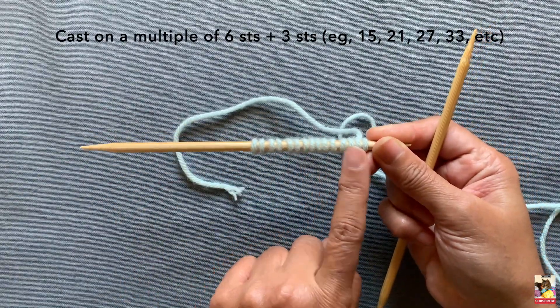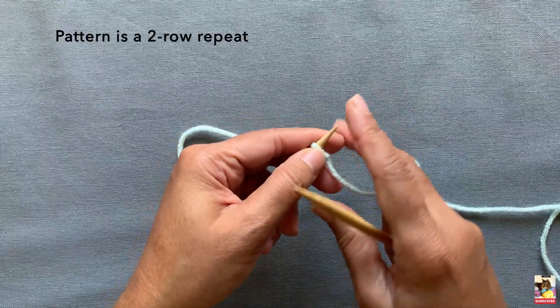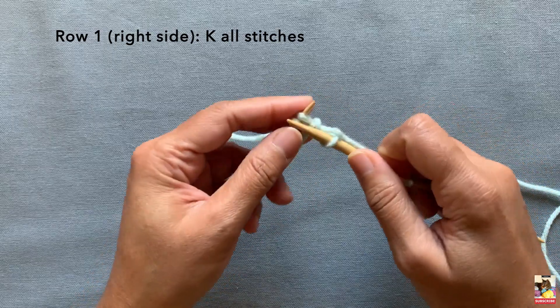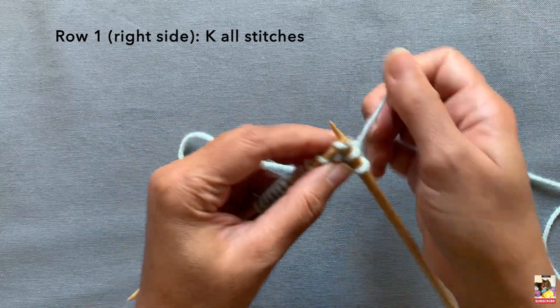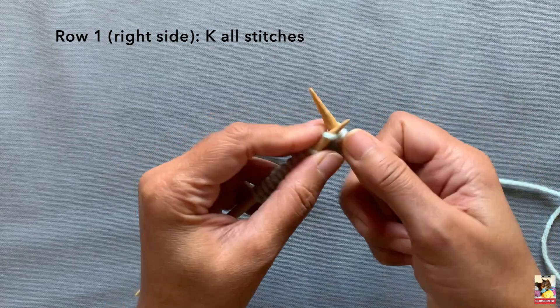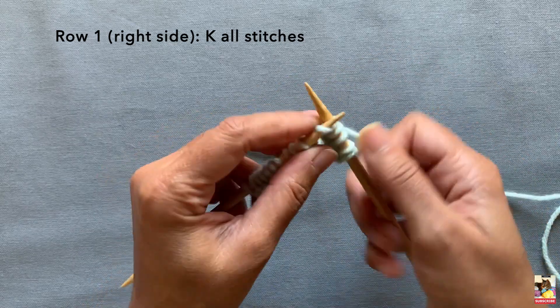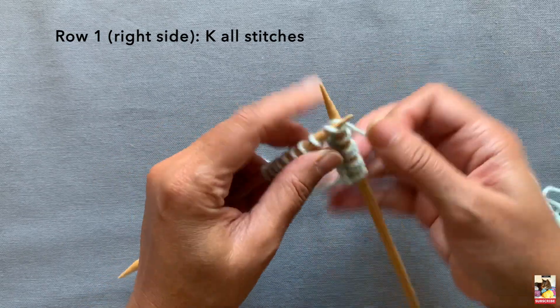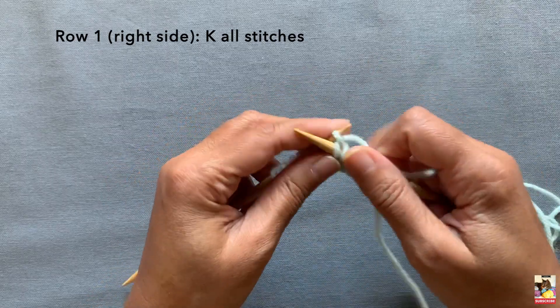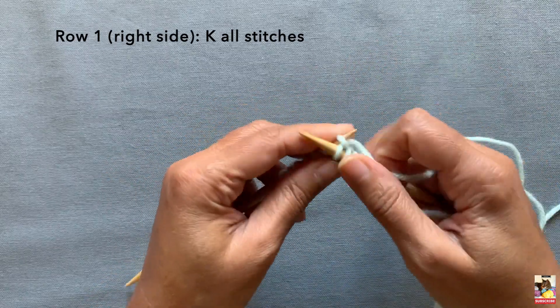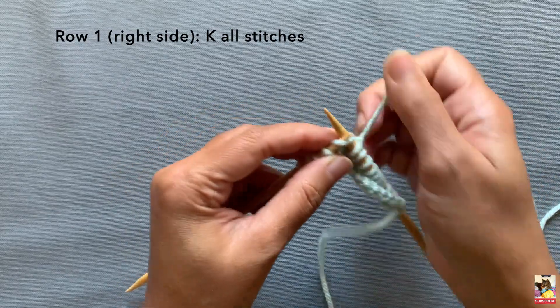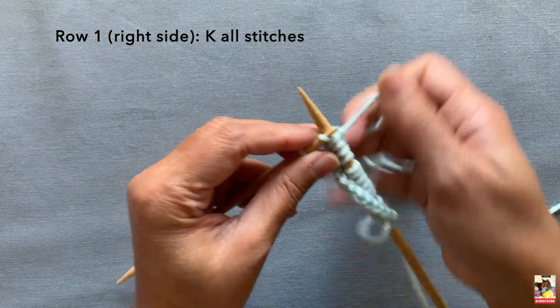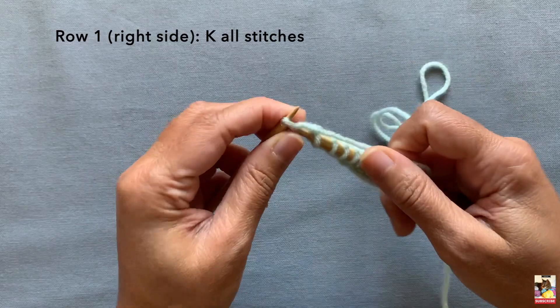Here we go, we have 15 stitches—so it's a multiple of six, six times two is 12, plus three is 15. The pattern itself is a two-row repeat. The first row, which is the right side of your work, is just a regular knit. So we're just going to knit all the stitches. This is where the super simple part comes in because one row is just a plain knit, so it makes for great TV knitting if you are a TV knitter like me, or if you just want to be in the moment and knit and enjoy that knitting journey being mindful, then that's great too.